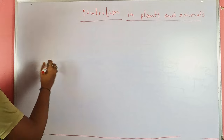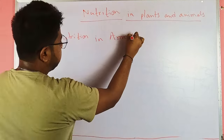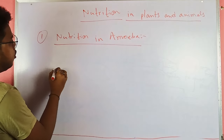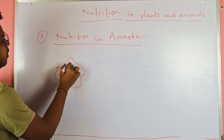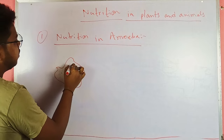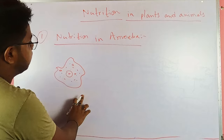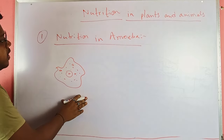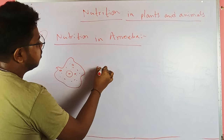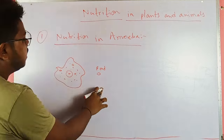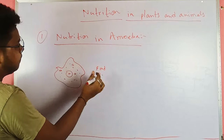Now we will discuss nutrition in amoeba. Amoeba is a unicellular organism with a nucleus, cytoplasm, and cellular organelles. When amoeba requires food, it grabs food present in front of it by enlarging one portion of the cell.